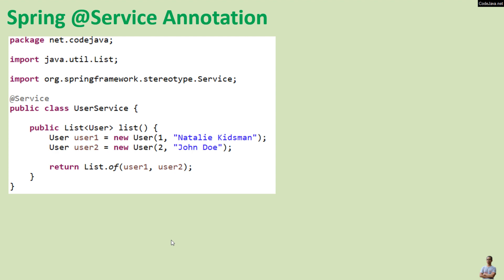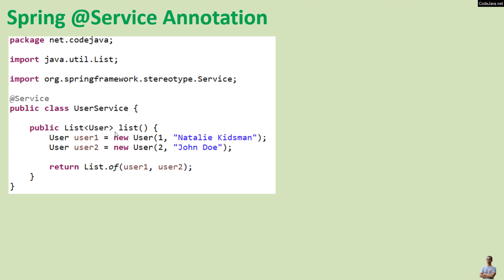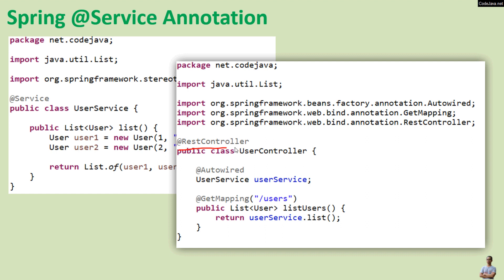Let me show you a quick example. We have a business class UserService that implements a business method 'list' returning a list of User objects. We use the @Service annotation to mark the class as a service. It comes from the package org.springframework.stereotype.Service.